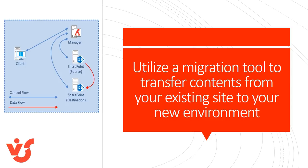Utilize a migration tool to transfer contents from your existing site to a new environment. There are many solutions available, such as Office 365 Migration API, Microsoft Fast Track, Hybrid Connection, and third-party tools like Metalogic Sharegate or AvePoint. WEGO is applying their analysis to remove irrelevant data and exceptionally large files from their content transfers. Extremely large files are best stored in another location, like OneDrive.